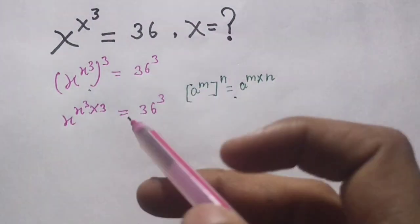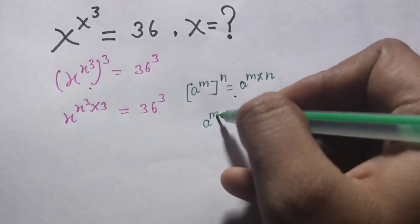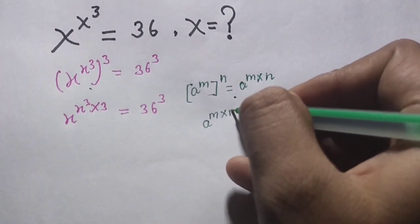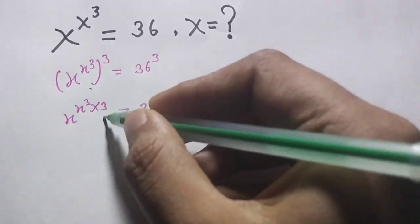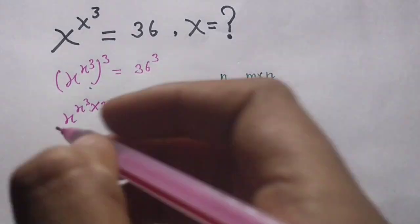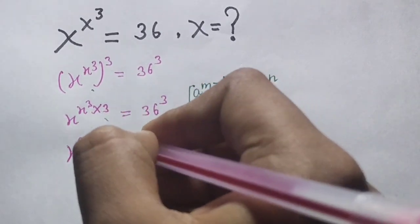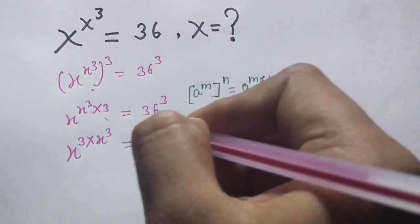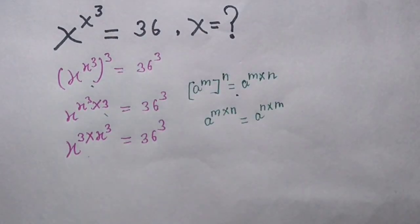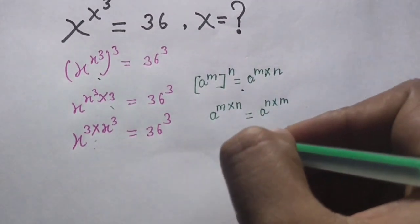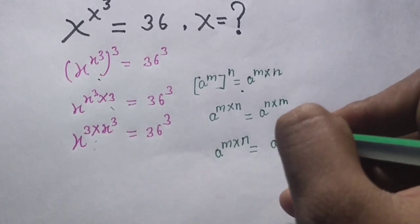Also use this identity: a power m into n equals a power n into m. Using this on both sides, we get equal to 36 power 3. Also use the second identity: a power m into n equals a power m.